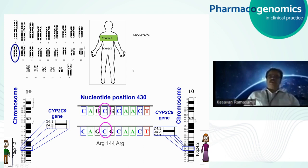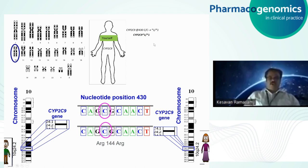The genotype star 1 / star 1 means that at position 430, the C allele is present in both copies. This is the wild type or normal allele, called star 1. The amino acid produced is arginine — since both copies carry C, arginine is present at position 144 in the protein. The problem arises when C is replaced by T at nucleotide position 430 — this is a single nucleotide polymorphism.